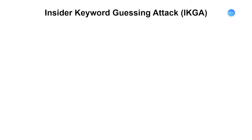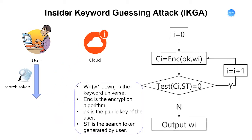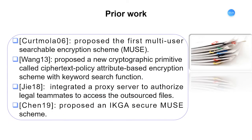Though PEKS enables different users to share encrypted data with each other without frequent communication, it suffers from a special kind of attack, namely the insider keyword guessing attack (IKGA). When the cloud server receives a search token from the user, it can use the public key to generate the ciphertext of all keywords freely. Then, the keyword corresponding to the token can be gradually identified by performing tests with the generated ciphertext.